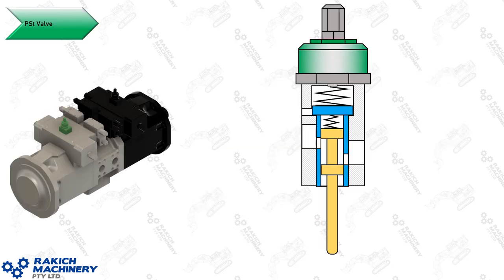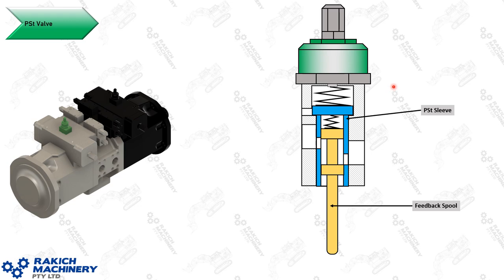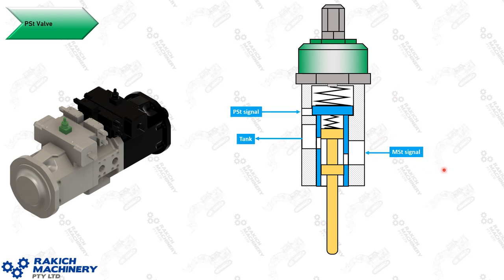I'll be using a schematic of the pump to explain the function of the system through the presentation. However, the PST valve is really difficult to represent as a schematic symbol that's visually intuitive on how it works, so I'll explain using this basic cross-section diagram. Inside the valve you've got two concentric spools: there's a PST sleeve and then inside of that is the feedback spool. Their main responsibility is to act as a variable orifice and control the MST signal that enters the valve by opening and closing this orifice.